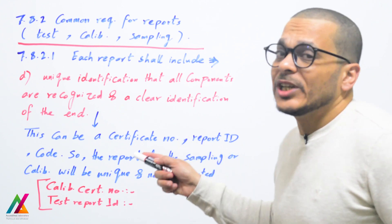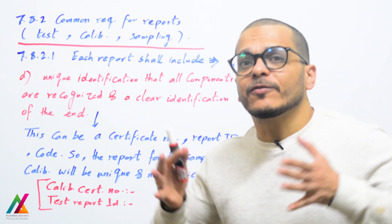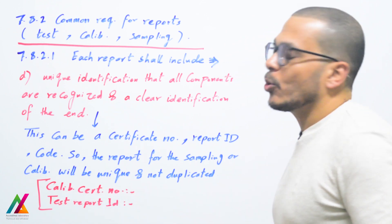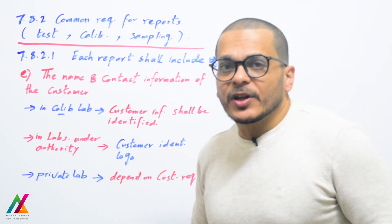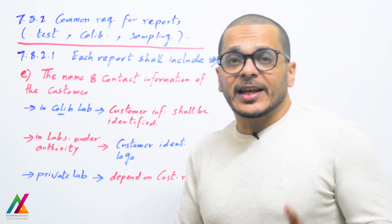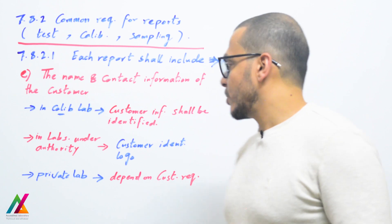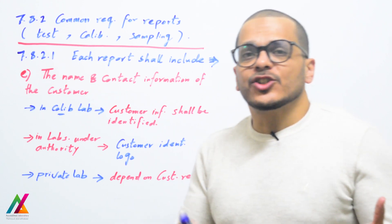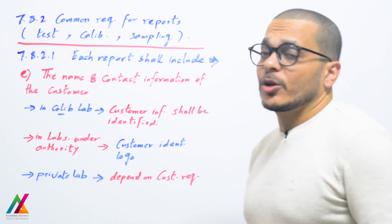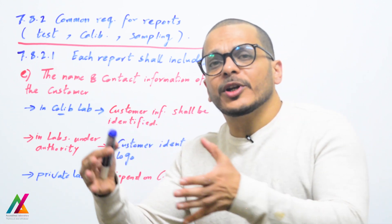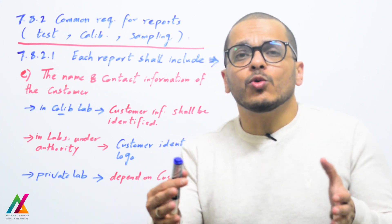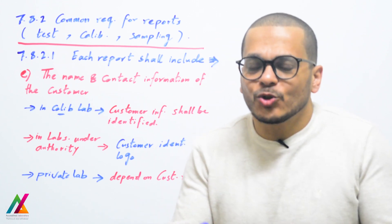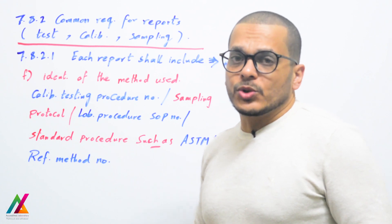The report number shall be unique for each report or sample — not duplicated. This applies to a calibration certificate number or test report ID. The name and contact information of the customer shall also be included. In a calibration laboratory, the calibration certificate shall include information about the customer. Customer information should identify the organization, company, or government authority. In a private lab this depends on customer requirements, but it is better to include it.